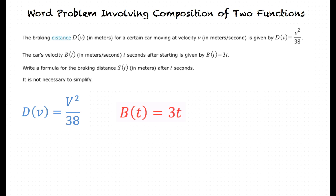If we take the composition of d with b, we can get the braking distance as a function of time. What is the composition of d with b? The composition is usually denoted as f of g of x. When we denote the composition of d with b, we get s of t equals d of b of t.